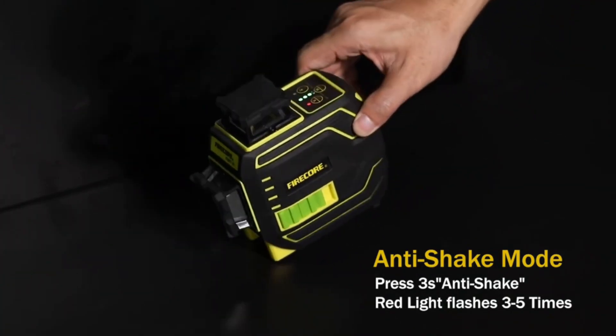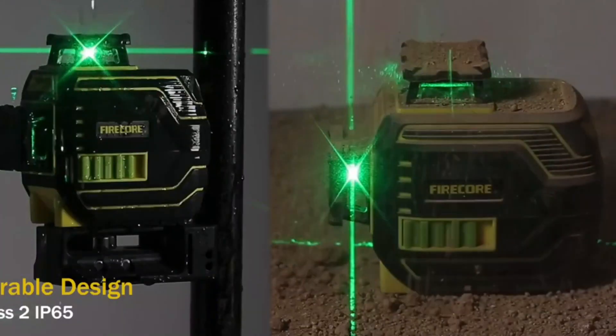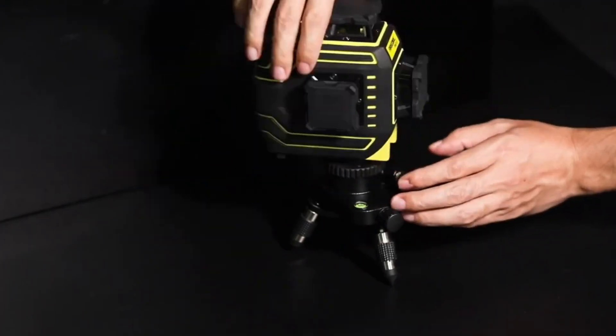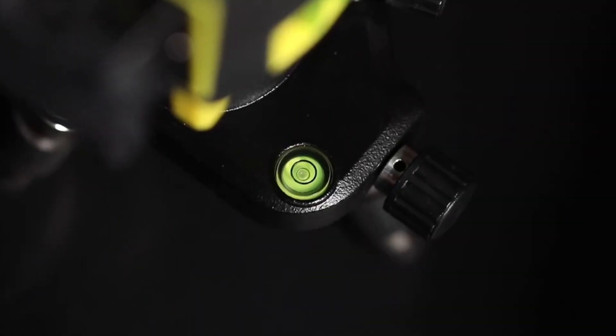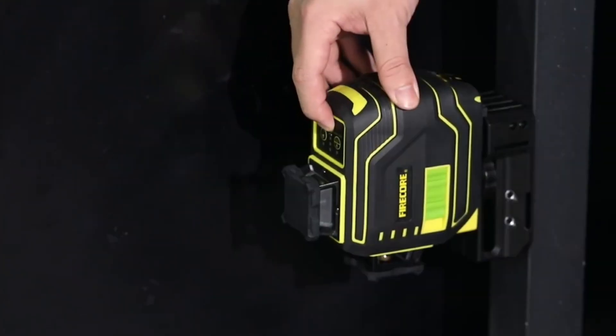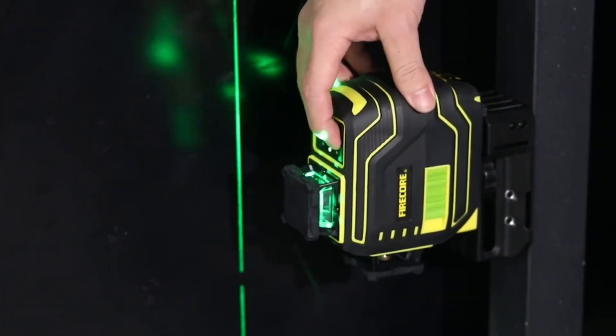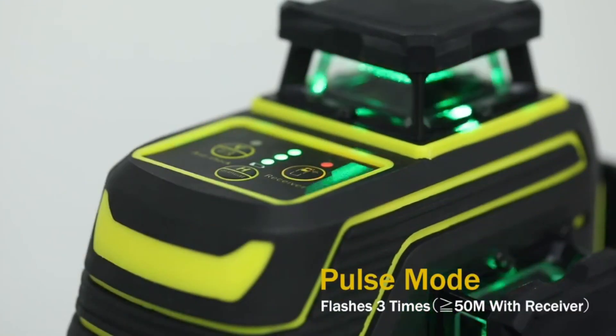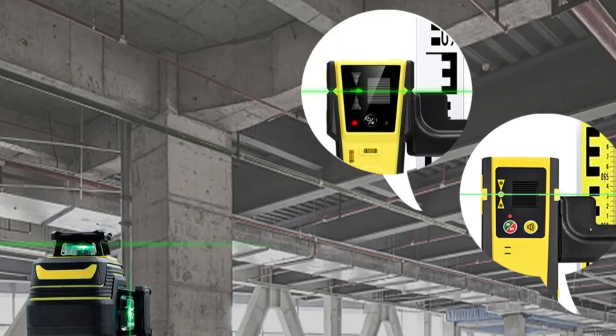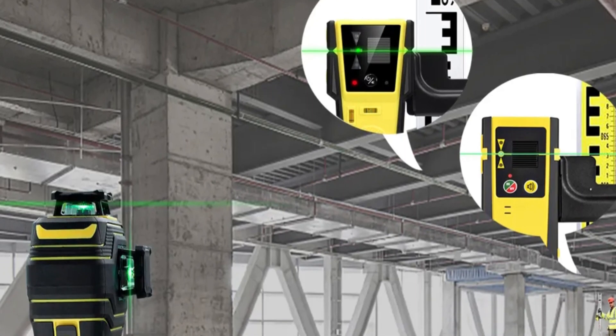It comes with a rechargeable 7.4V 2600mAh lithium battery, providing approximately 10 hours of continuous operation. It is also dust-tight and water-resistant, with an IP65 rating, making it suitable for most outdoor environments. The level is easy to use, with a 1/4 mount size, and compatible with tripods and accessories.